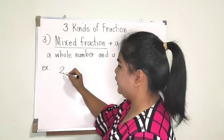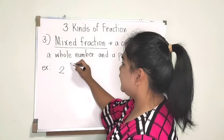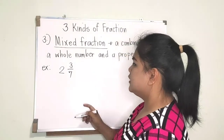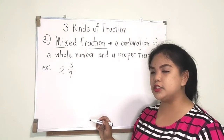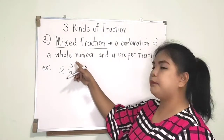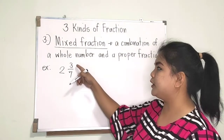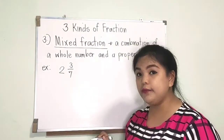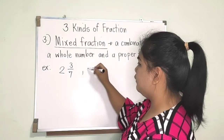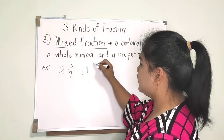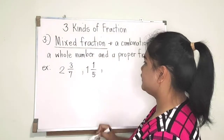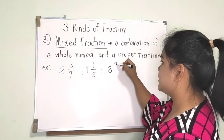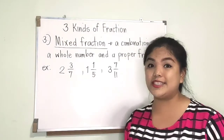For example, two and three-sevenths. The fraction part must be a proper fraction — meaning the numerator is less than the denominator. Other examples are one and one-fifth, or three and seven-elevenths.